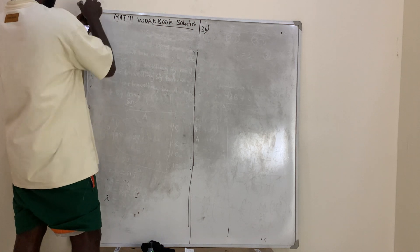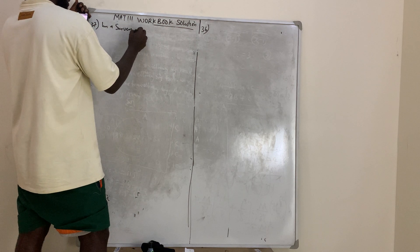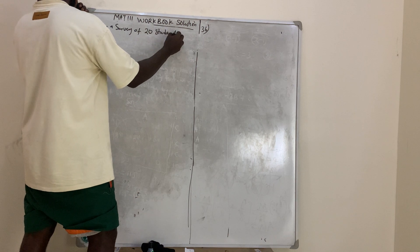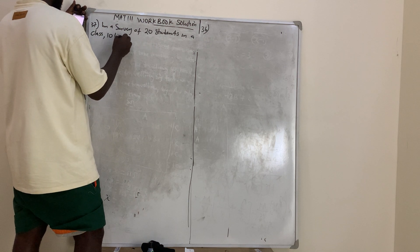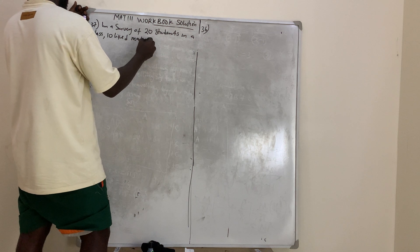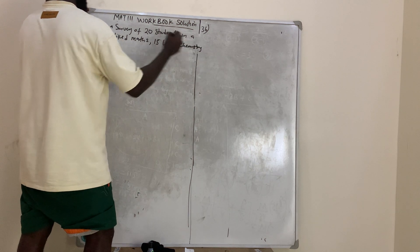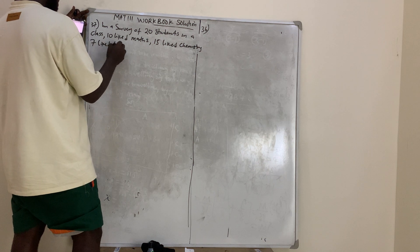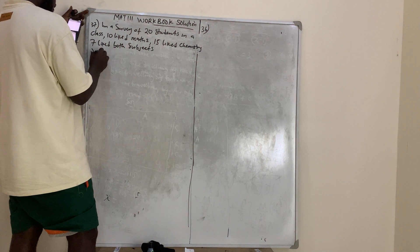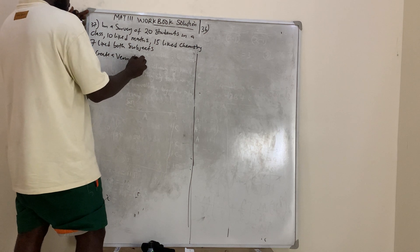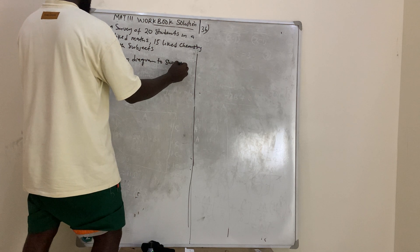Question number 37: In a survey of 20 students in a class, 10 like maths, 15 like chemistry, and 7 like both subjects. Part one: draw a Venn diagram to show this information.